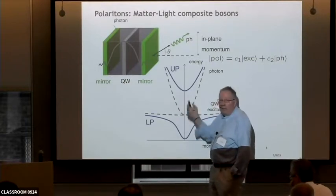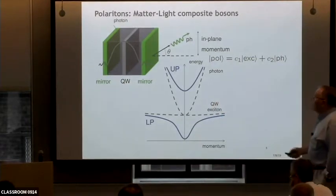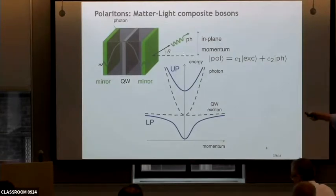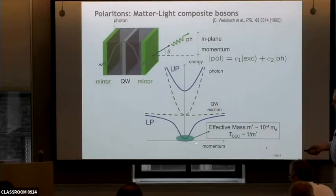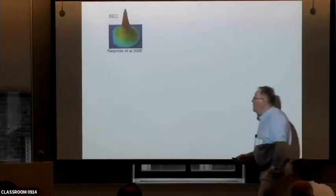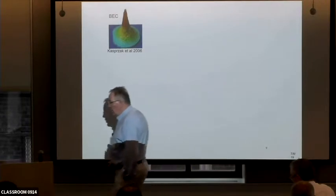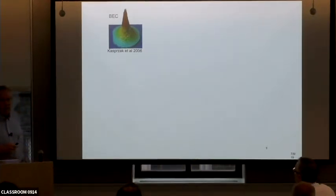And if the mirrors are flat, when what eventually emerges as a photon comes out, the angle at which it comes out can be translated into the in-plane momentum. So it's quite easy to determine the spectrum down at the bottom here. And that's what people have done. So let me just run through quickly some of the things that have been achieved.